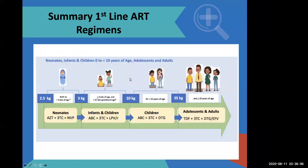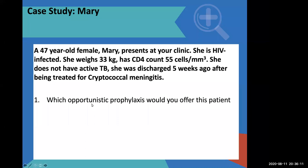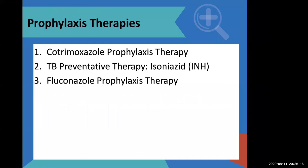Which opportunistic infection prophylaxis do we offer this patient? Yes, she qualifies. Her CD4 count is 55 — below 200. For cotrimoxazole prophylaxis, you need either a CD4 count less than 200 — which she has — or you are WHO stage 2, 3, or 4. She is stage 4 because she had cryptococcal meningitis. So yes, she qualifies for cotrimoxazole 960 mg per os daily.